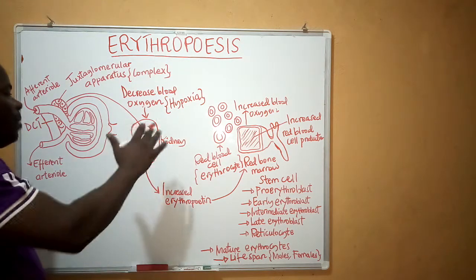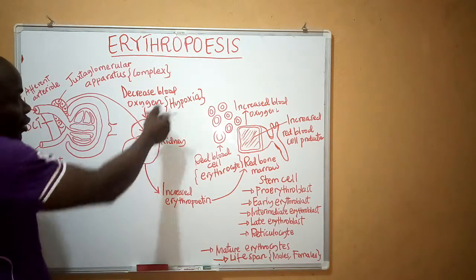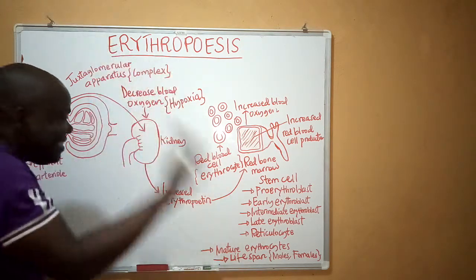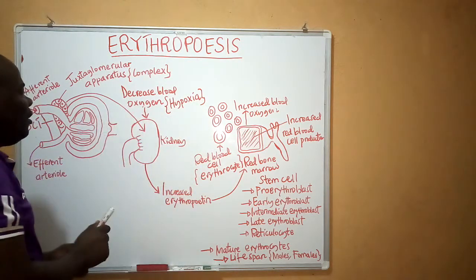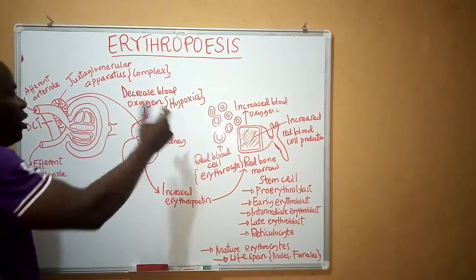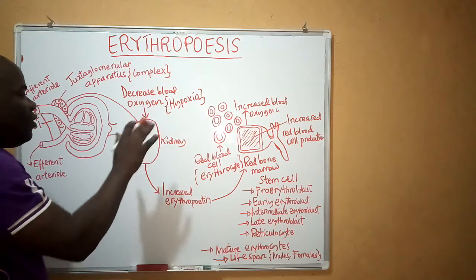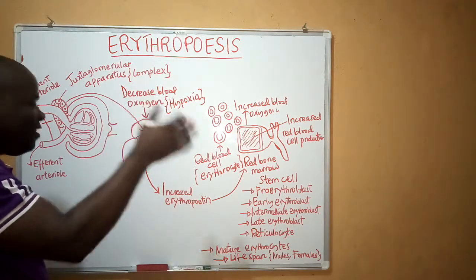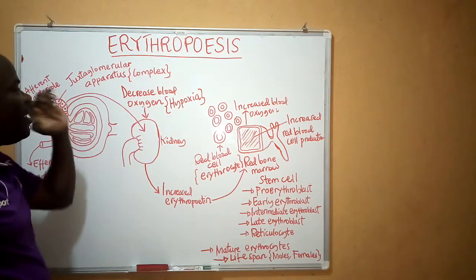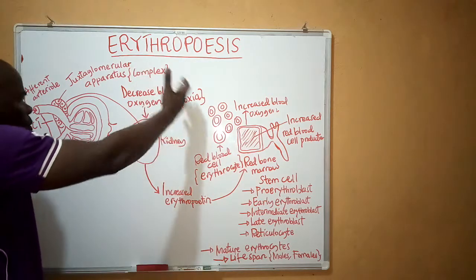The conditions that might result in decreasing oxygen — conditions that might result in hypoxia — include what we call hemolytic anemia. Hemolytic anemia actually occurs in red blood cells, especially resulting from deficiency of a certain enzyme known as pyruvate kinase. Pyruvate kinase deficiency results in energy deficiency in erythrocytes.